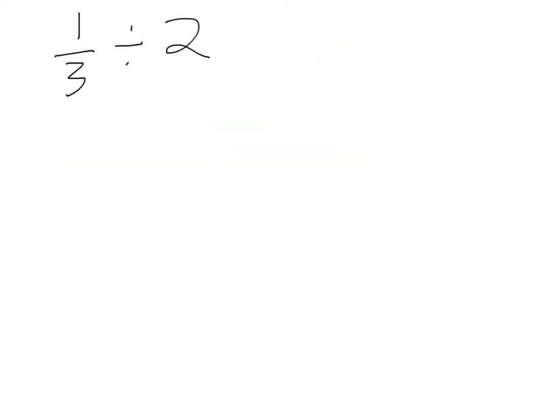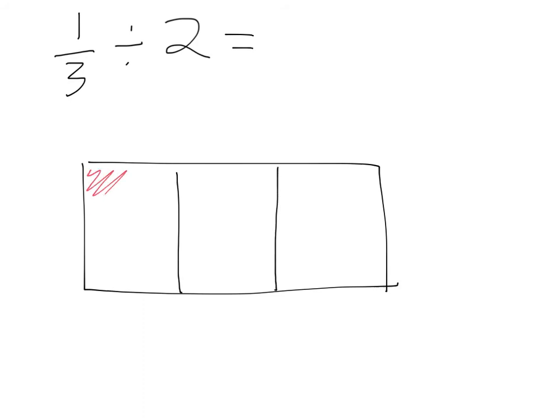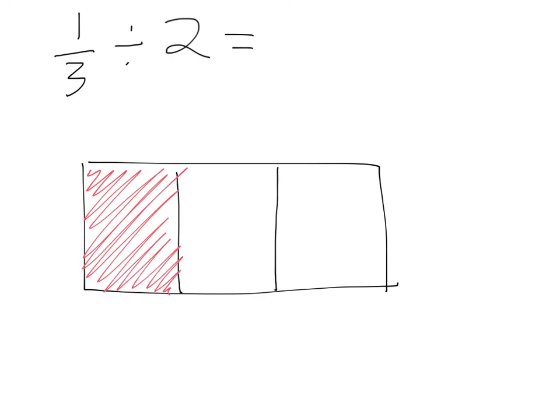One more example. Here we have one-third divided by two. First, I'm going to make a model that's one-third. I'll shade in that first third so I know what my one-third is. Then I'm dividing it by two. So I want to divide it into two rows. Now I have my one out of three, and I've divided that whole thing into two rows. I want to shade in one of these, one out of the two.